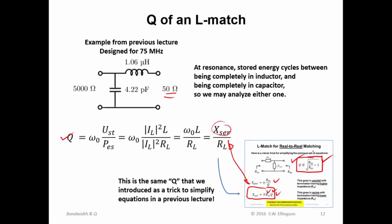Now, I've done this for a special case. However, I'll tell you it's true in general. I just think it's useful to see it done for a simple problem. And you can generalize this in all kinds of ways. But the basic idea is true, that this Q that we're talking about here, this very general concept, is in fact this Q that we introduced to simplify the equations when we have real-to-real matching.